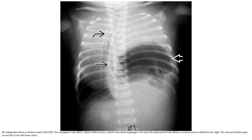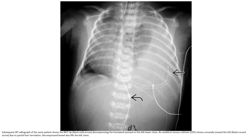AP radiographs of a newborn with left congenital diaphragmatic hernia. The nasogastric tube is quite in the distal esophagus. The heart and endotracheal tube shift to the right. The stomach lies in the left lower chest. Subsequent AP radiographs in the same patient show the nasogastric tube decompressing the stomach in the left lower chest, with umbilical venous catheter convexity toward the left due to partial liver herniation.